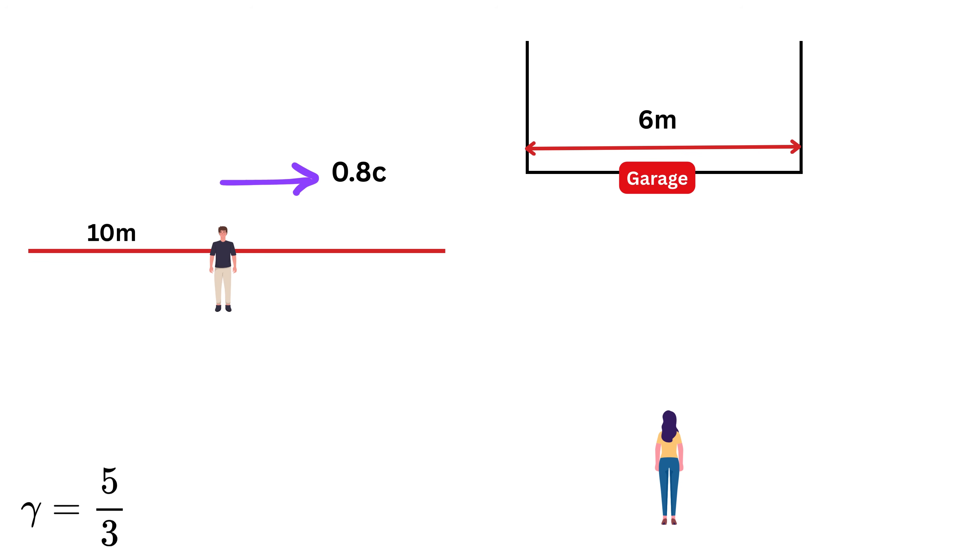Using the same length contraction formula, we find that the length of the pole as seen by Alice will be 10 over gamma, or 6 meters. So in Alice's frame, the pole appears exactly 6 meters long, the same as the garage. It seems that for a brief moment, the entire pole fits perfectly inside the garage.